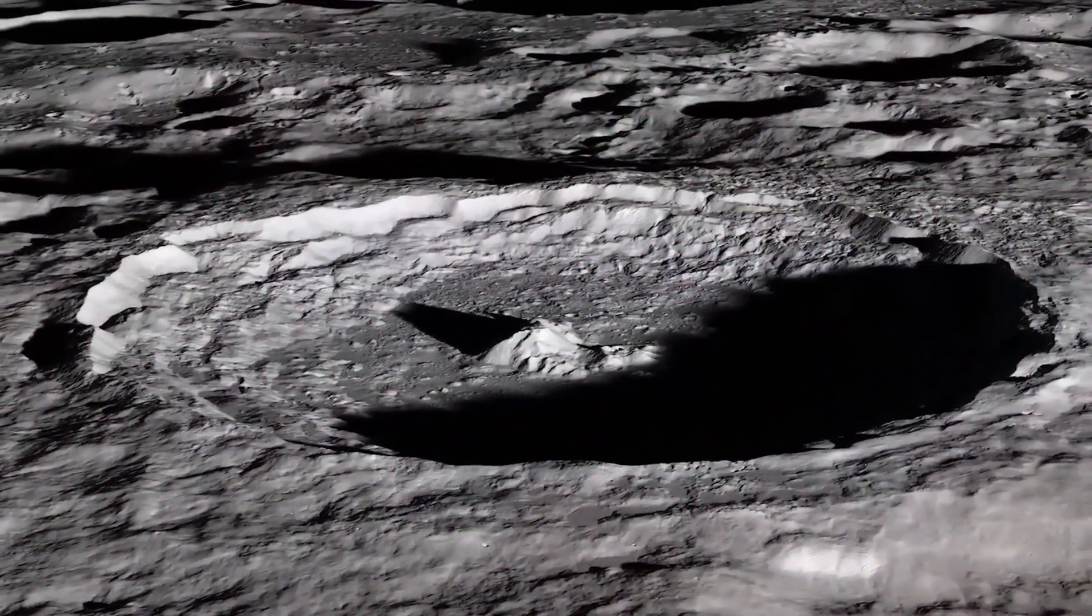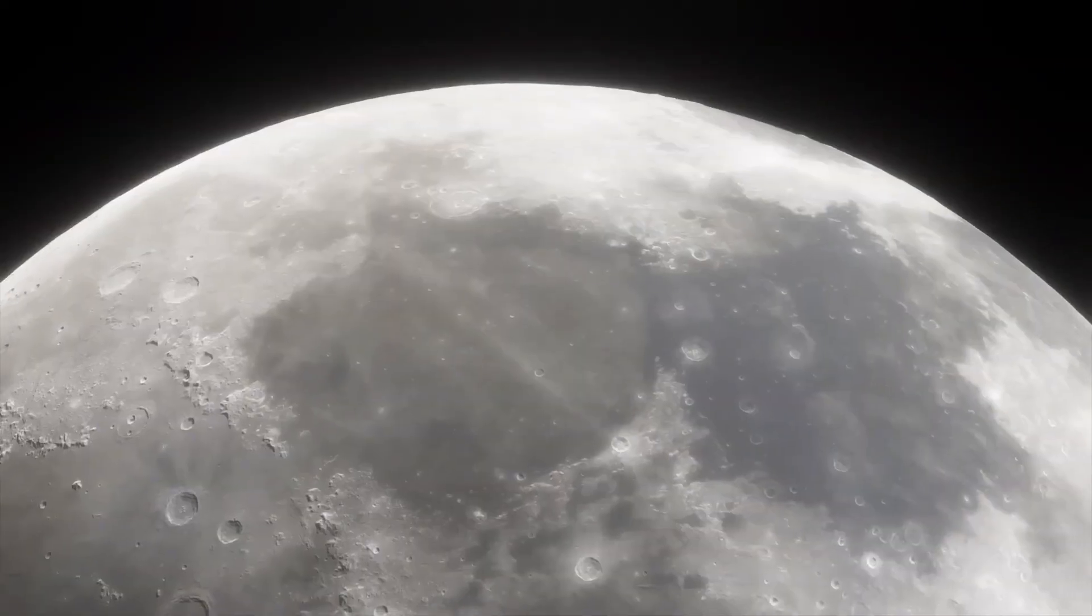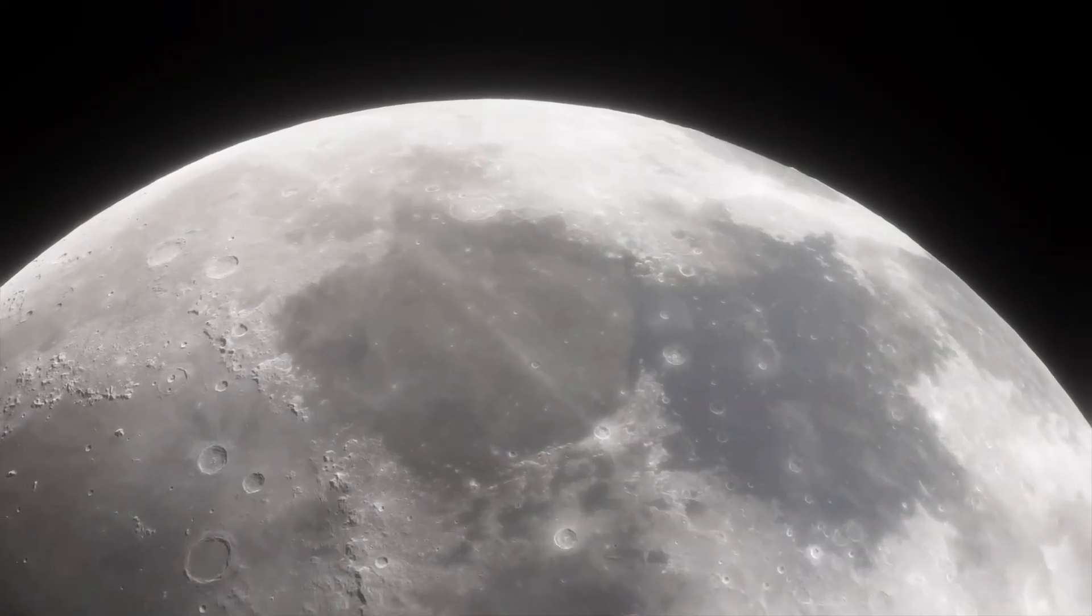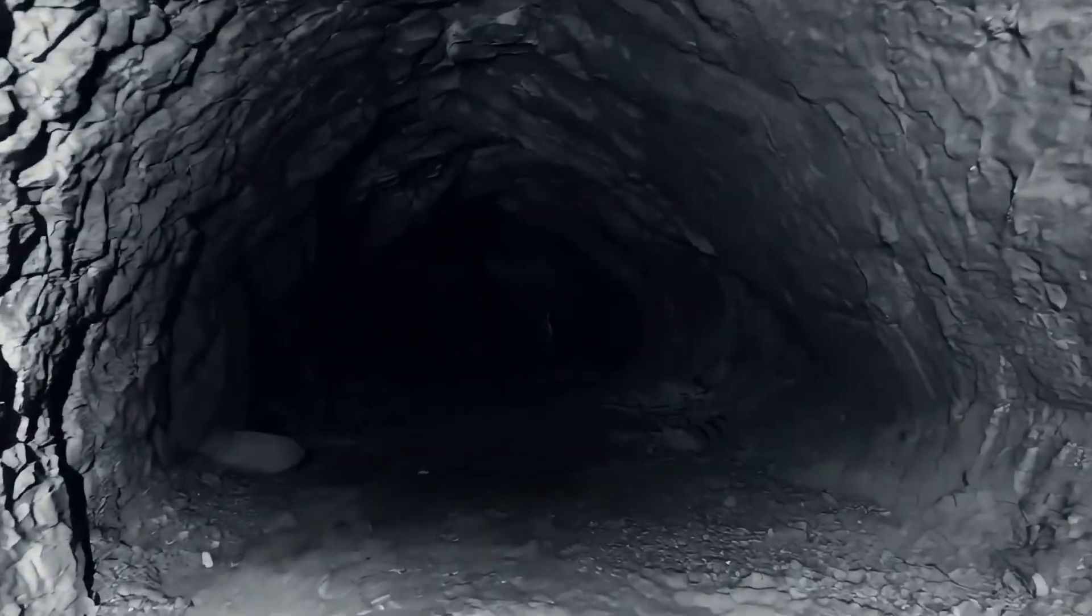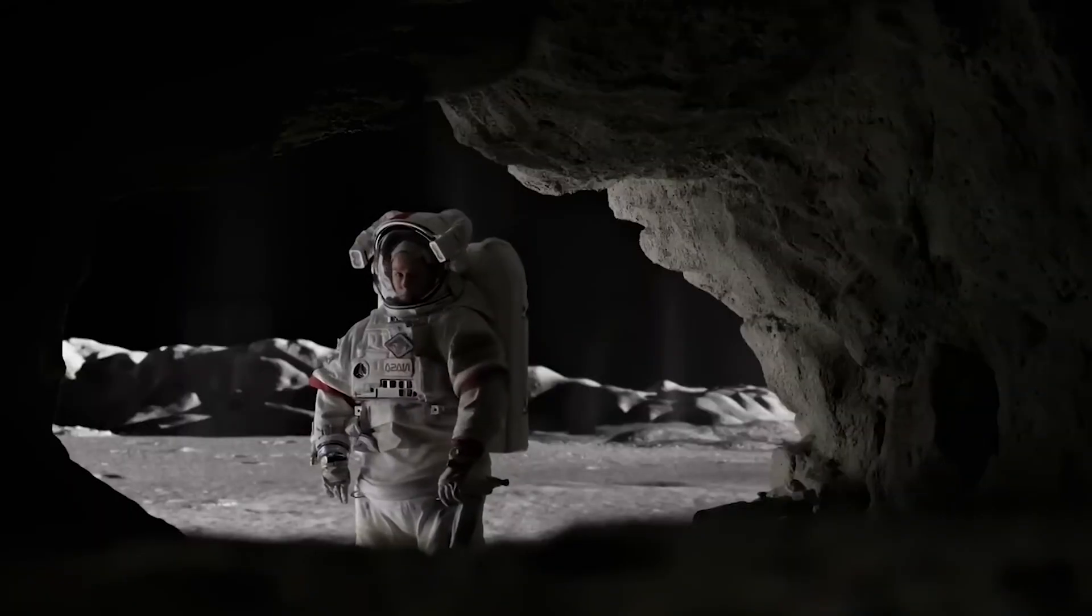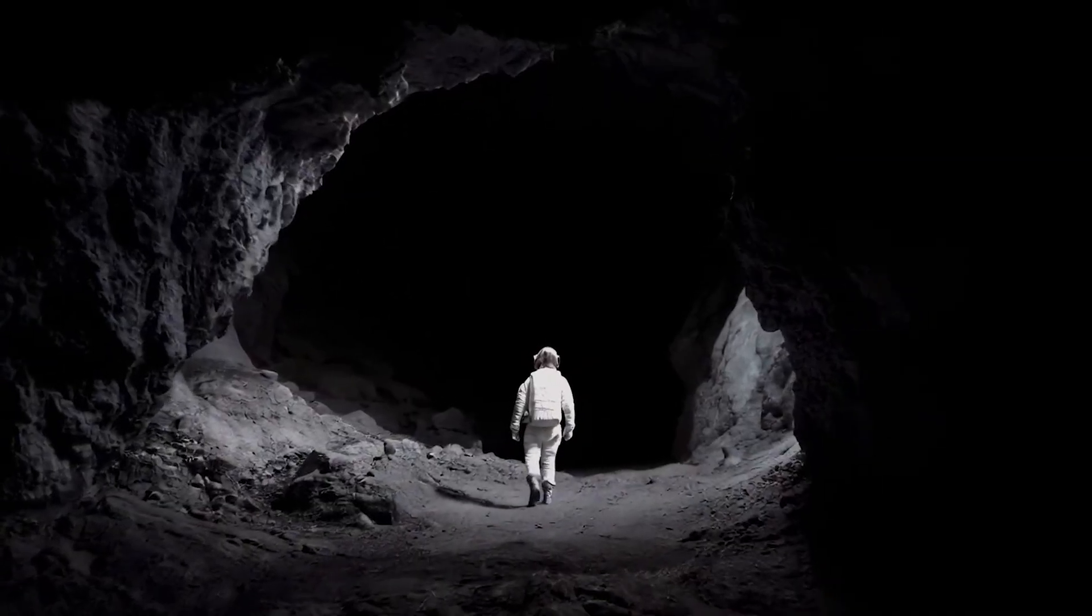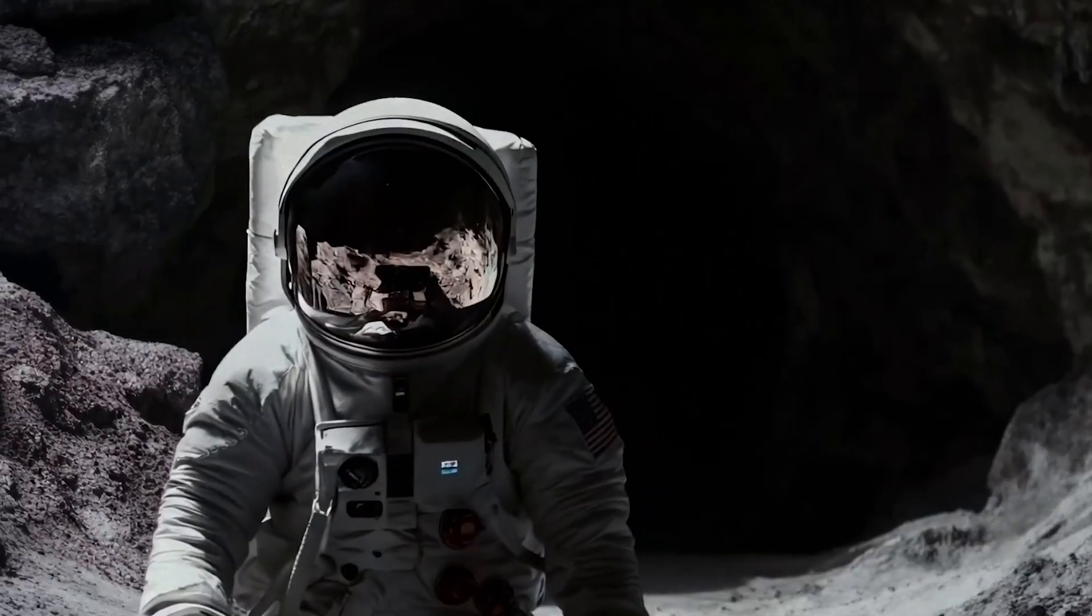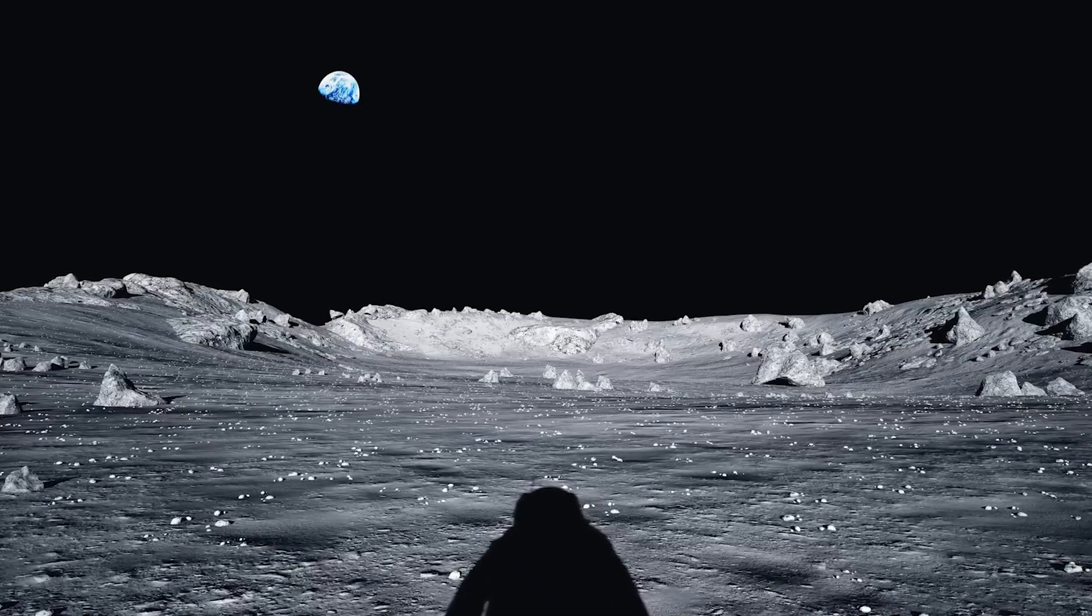But there's one discovery that hasn't made headlines, not yet. While mapping potential base sites, China's lunar probes identified something strange: massive underground tunnels formed by ancient volcanic activity. These so-called lava tubes are miles long and wide enough to fit skyscrapers. Shielded from radiation, temperature swings, and meteor impacts, they're ideal locations for human habitation. Scientists have speculated about these tubes for years. But now, China may have confirmed their existence and even mapped several promising entrances.